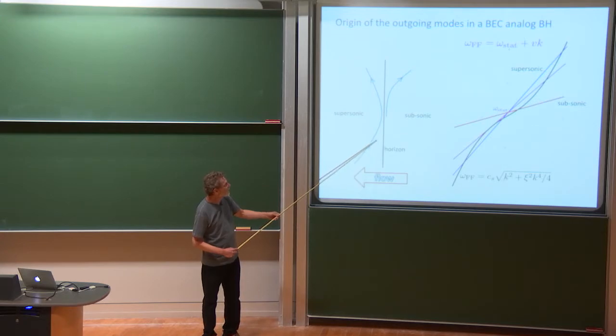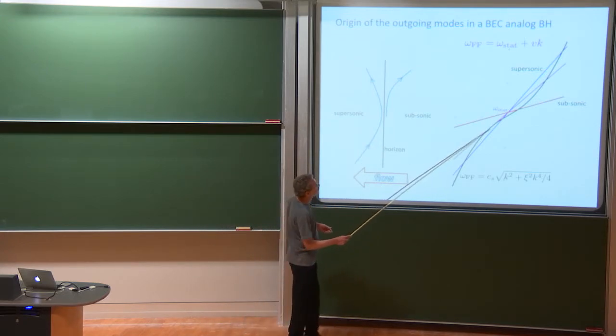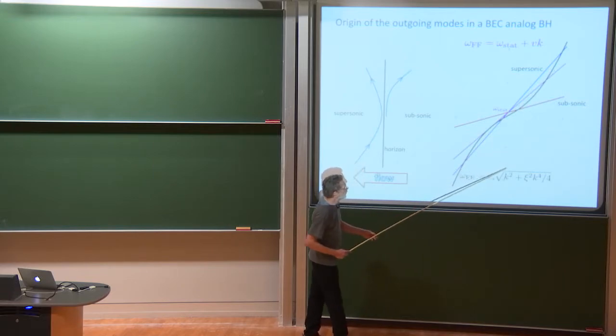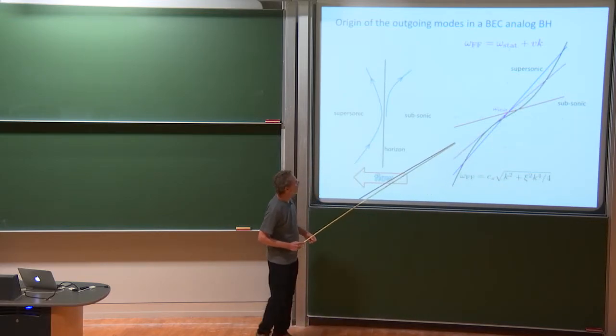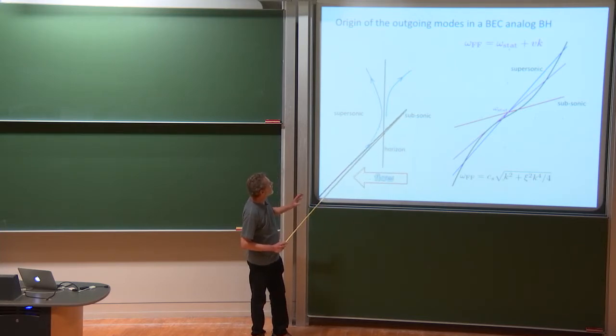So let's suppose we have an outgoing superluminal or supersonic mode that's heading for the horizon. Now, I have to actually specify, here's a dispersion relation, the square root of k squared plus k to the fourth term times the speed of sound.